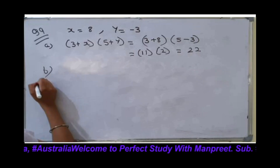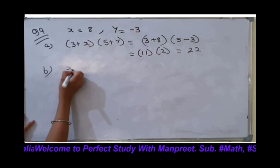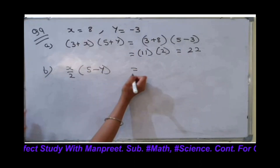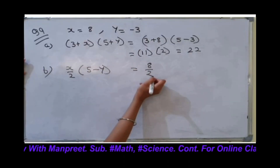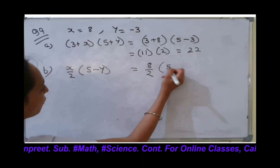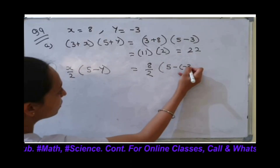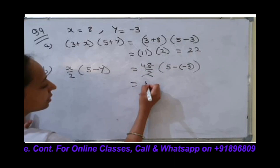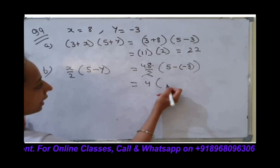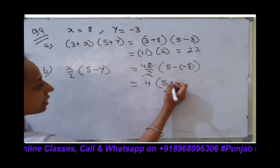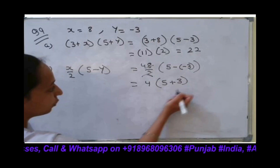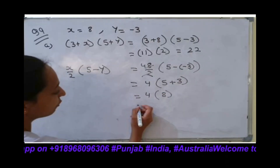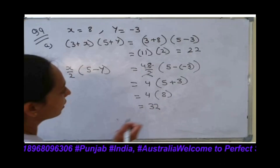Part B is (x divided by 2)(5 minus y). Again put the values: x is 8 divided by 2, and here will be 5 minus minus 3. Dividing gives 4, and minus minus becomes plus, so 5 plus 3 equals 8. Then 4 times 8 equals 32.